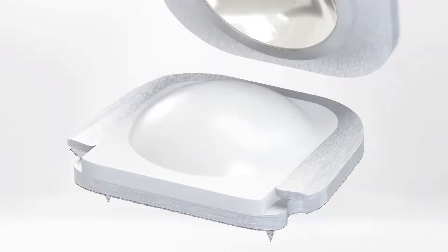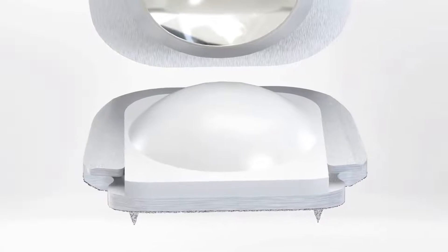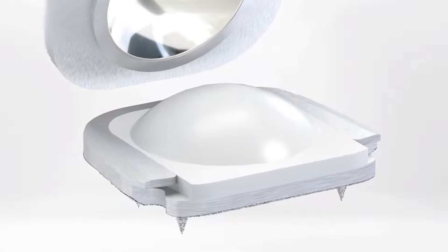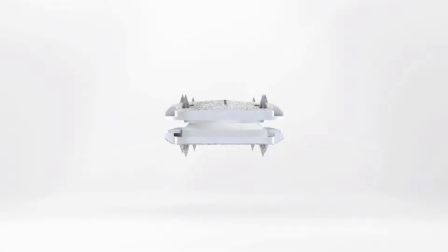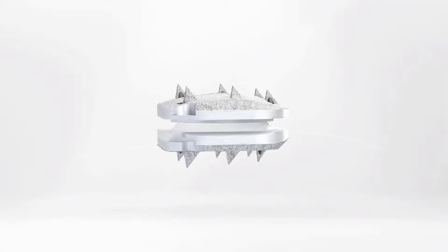ProDiscC Vivo is composed of two cobalt chrome alloy end plates and a polyethylene insert. The polyethylene insert is affixed to the bottom end plate, forming the ball, and a polished dome in the top end plate forms the socket.